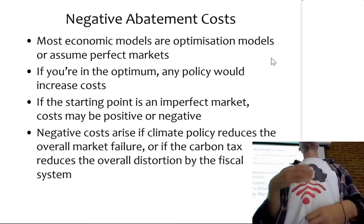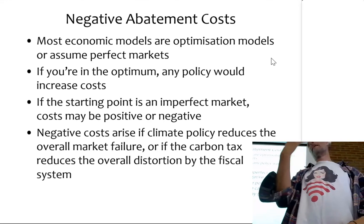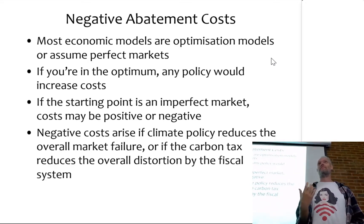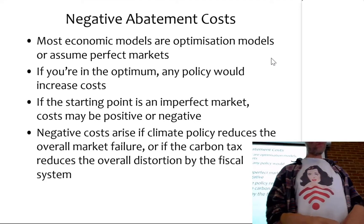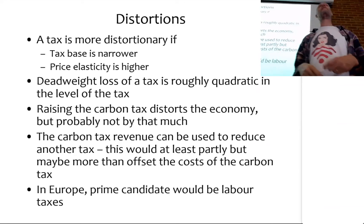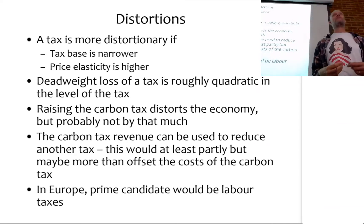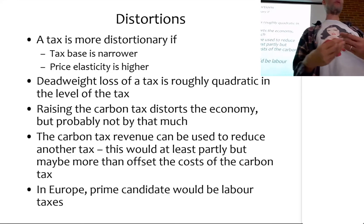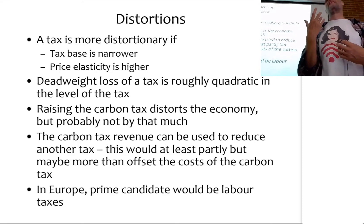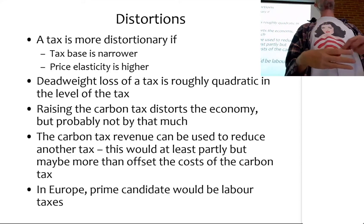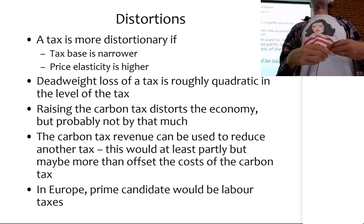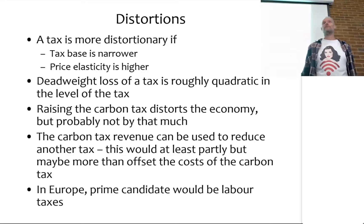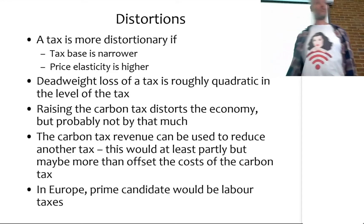The typical way of doing this is applying a carbon tax and using the carbon tax revenue in a smart way. For this, I need to talk about public economics. Public economists talk about the distortionality of taxes - essentially how much does a tax hurt aggregate welfare. The proper term is distortionality.